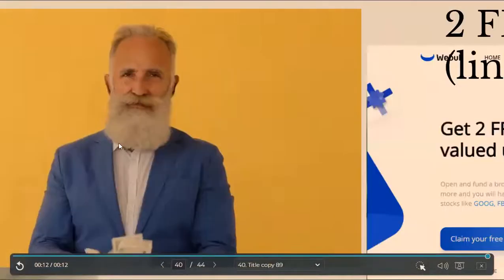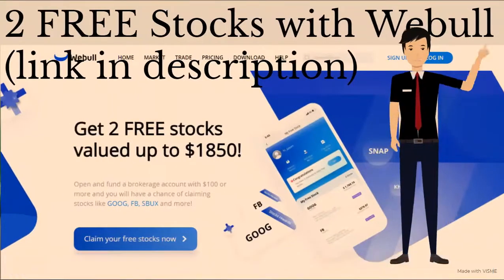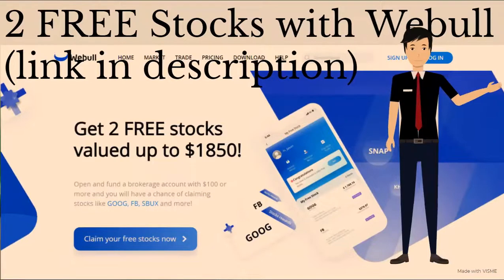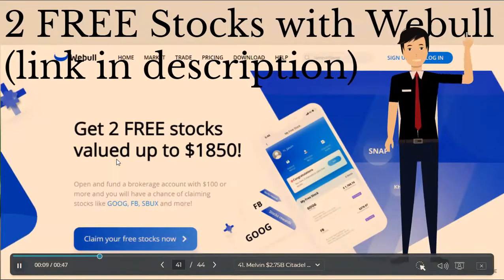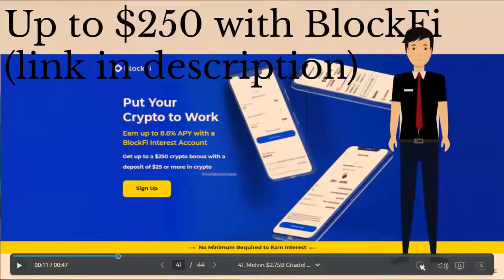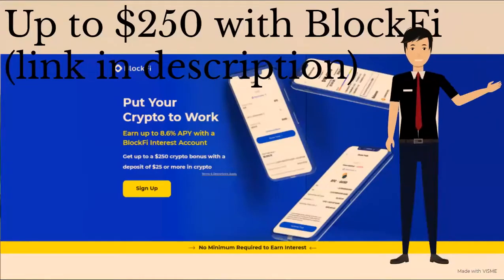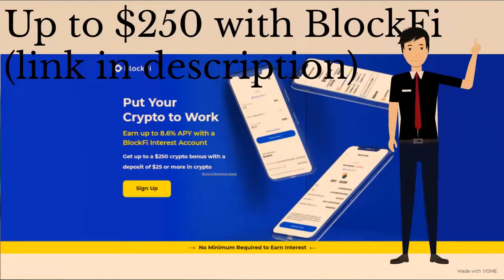So, with all that being said, in the meantime, you can get started with investing in AMC by getting two free stocks valued up to $1,850 when you use my Webull link down below and deposit $100 in your Webull account. Also, if you're interested in buying Bitcoin and earning interest on your crypto, sign up using my BlockFi link down below, and you'll get up to $250 as a crypto bonus depending on how much money you initially deposit into your account.